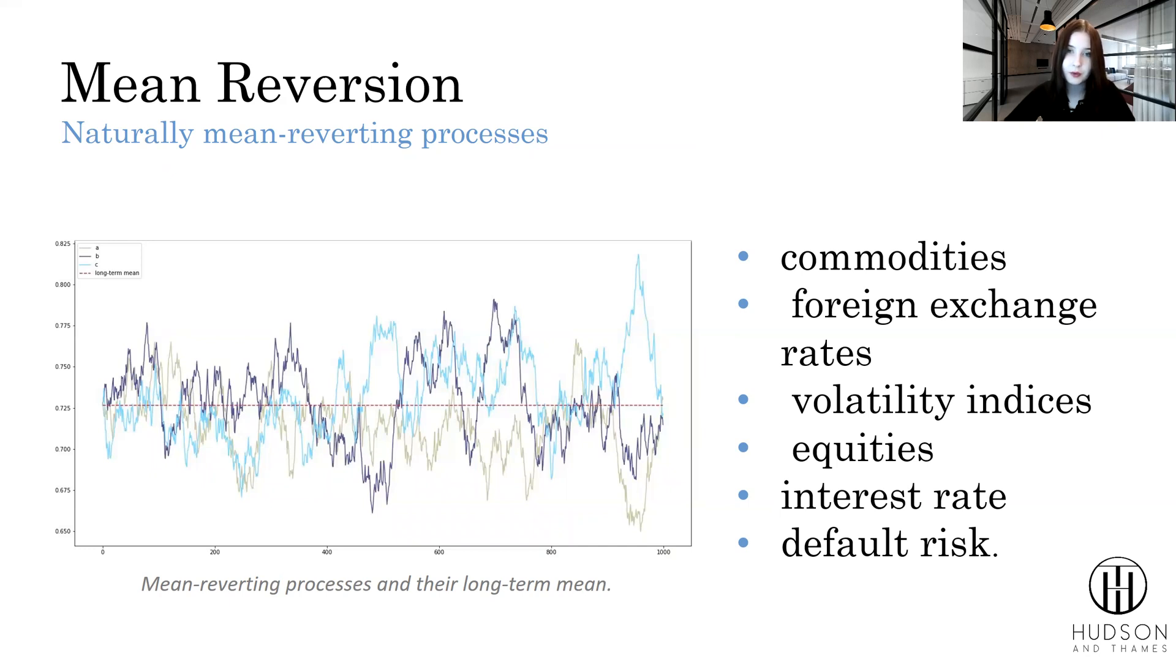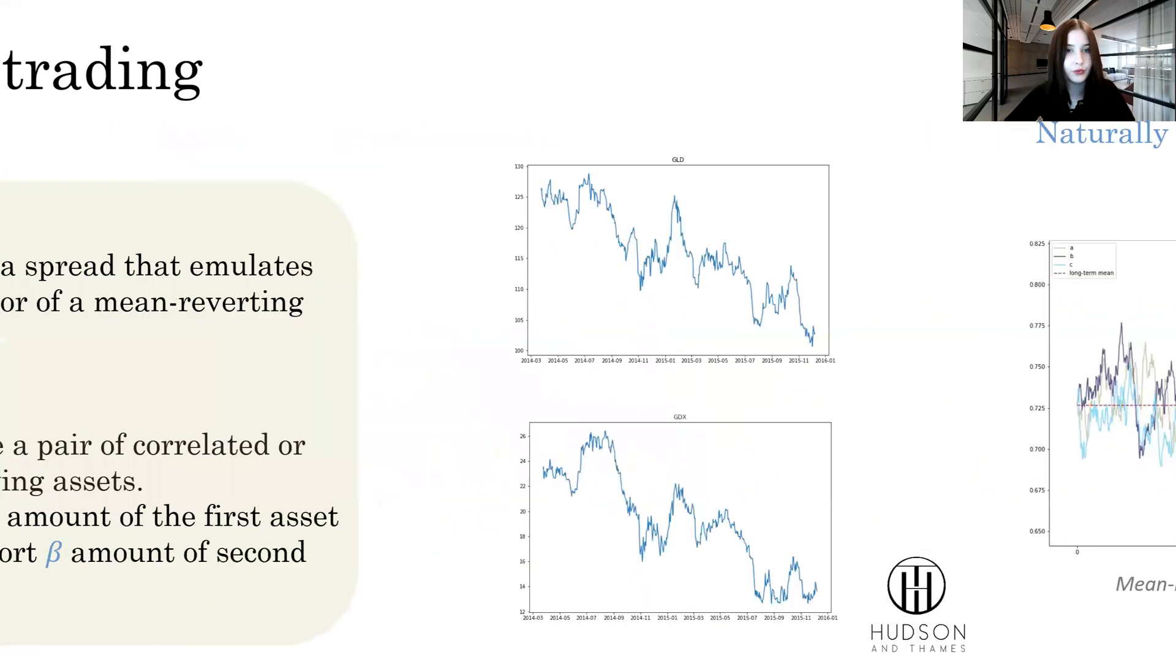But the amount of naturally mean reverting processes is pretty limited. And to overcome this constraint, we move to pairs trading.